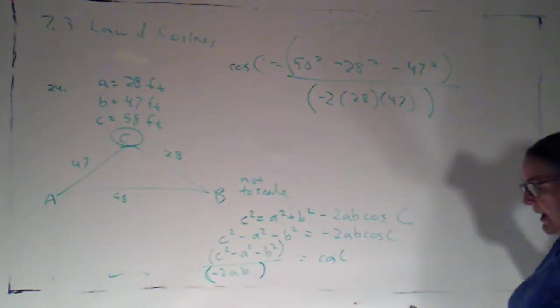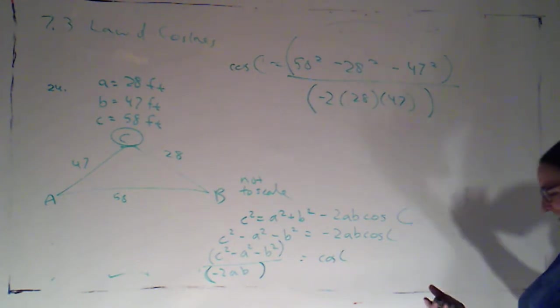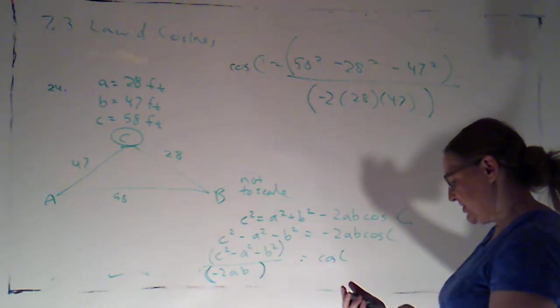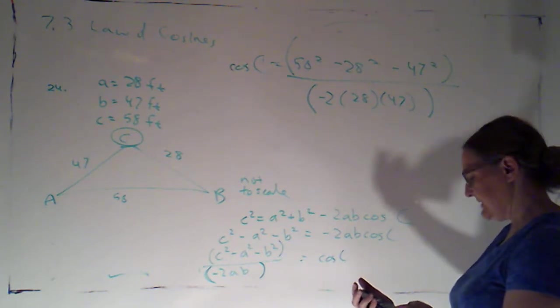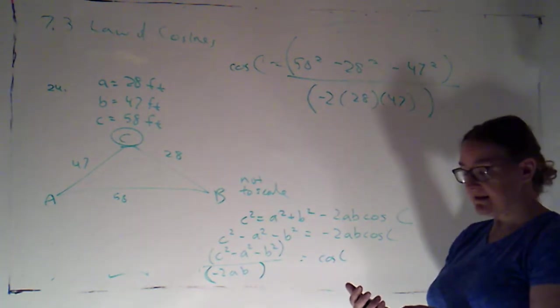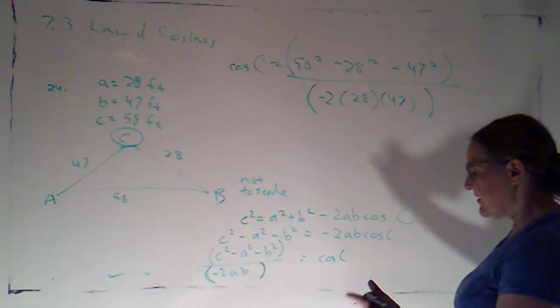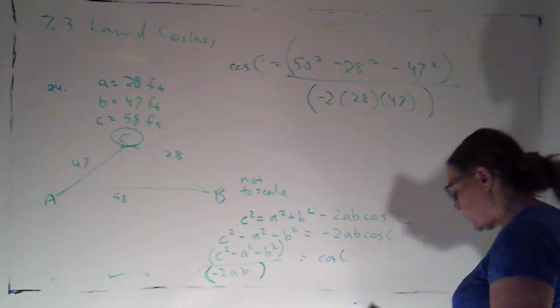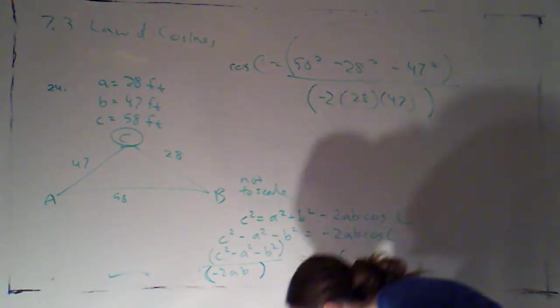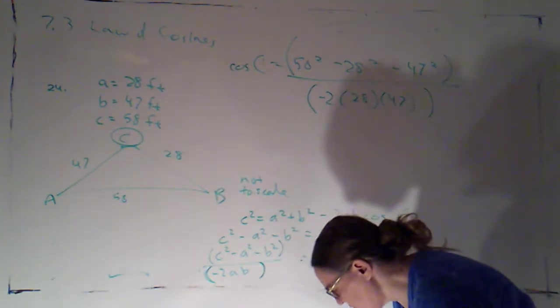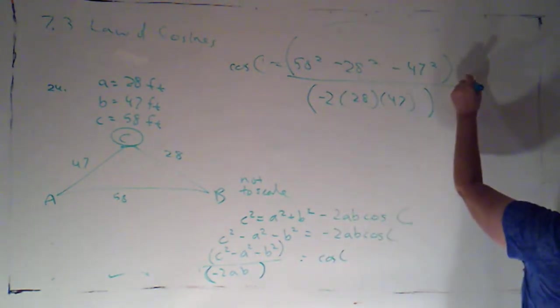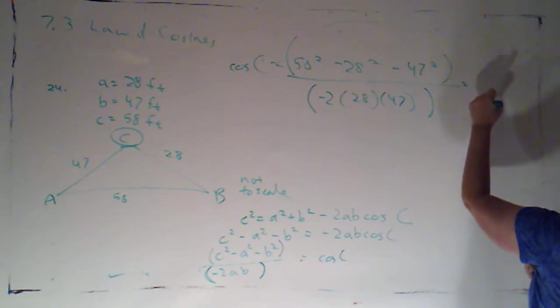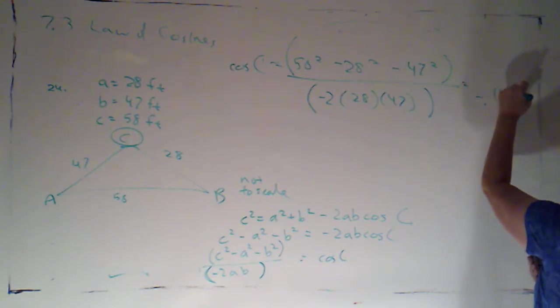Okay. Alright. Then I'm going to hit divided by parentheses, and then negative 2 times 28 times 47. Close the parentheses. And then hit equals. I get about negative point 1409 blah blah blah.